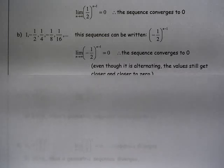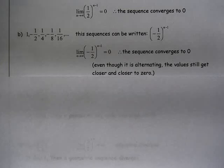This limit still approaches 0, even though the values are alternating. They're still getting, the absolute values are getting closer and closer, are getting smaller and smaller, so the values are getting closer and closer to 0.